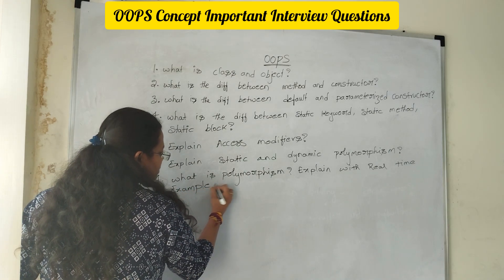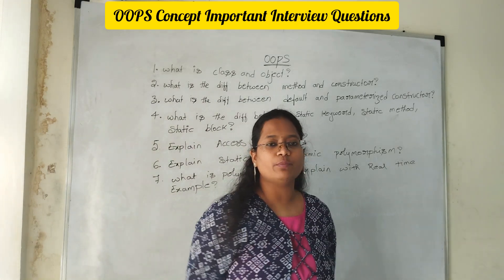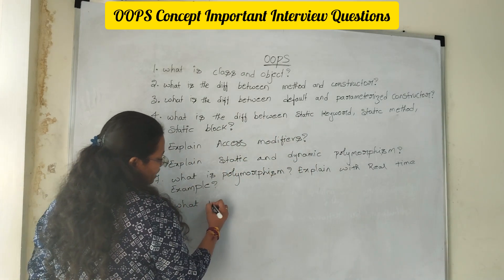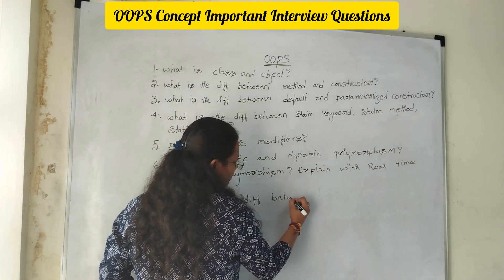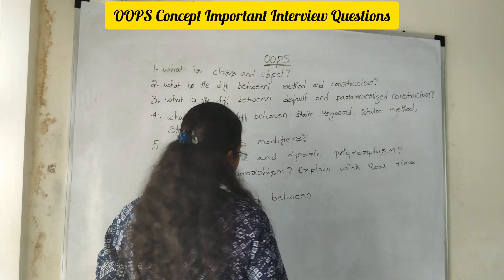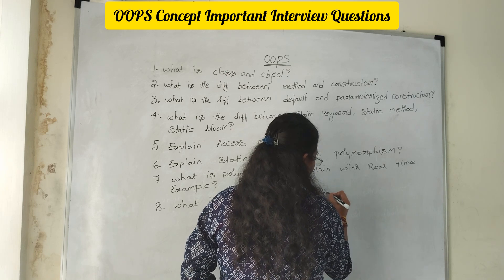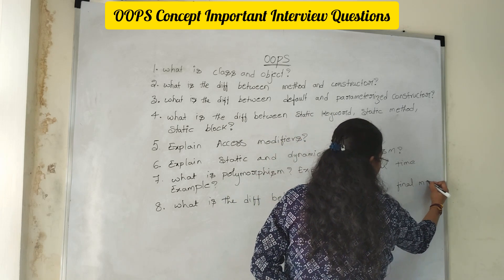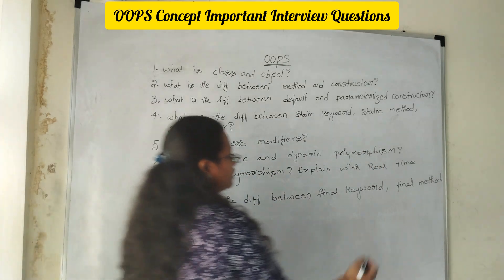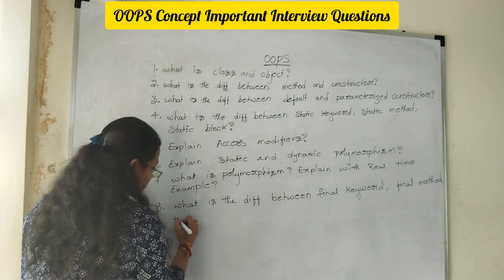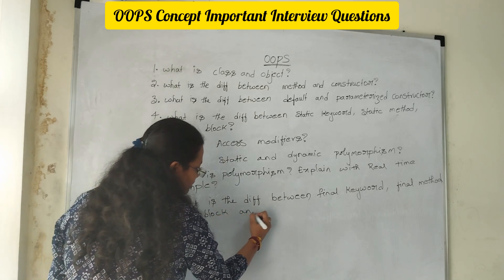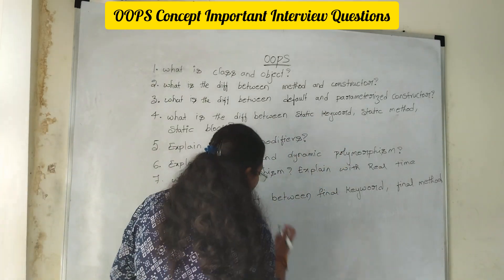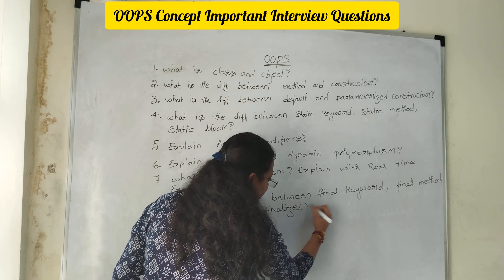Most people are just telling the definition and skipping. But when you are defining any polymorphism concept, you need to give a real-time example. Next, eighth question: what is the difference between final keyword, final method, finally block, and finalize method? You need to explain where we can use each of them.